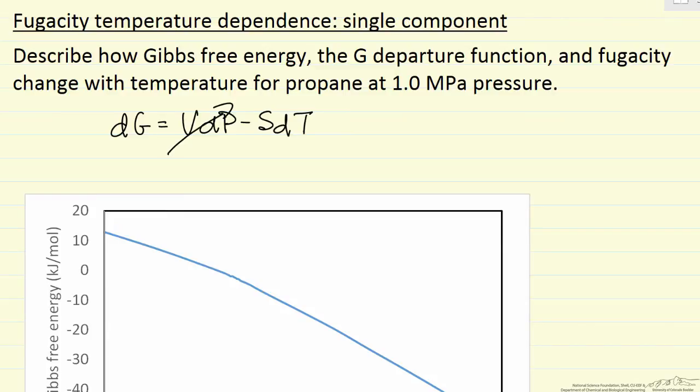At constant pressure, the VdP term is zero. Since entropy is positive, as we raise the temperature the Gibbs free energy decreases.